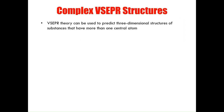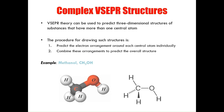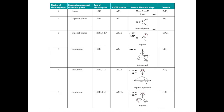VSEPR theory can also be used to predict the three-dimensional structures of complex substances with more than one central atom. The procedure is to predict the electron arrangement around each central atom individually and then combine these arrangements to predict the overall structure — for example, methanol. The following summary tables amalgamate all the information discussed in this lecture, showing all geometrical arrangements and the molecular shapes they can create.